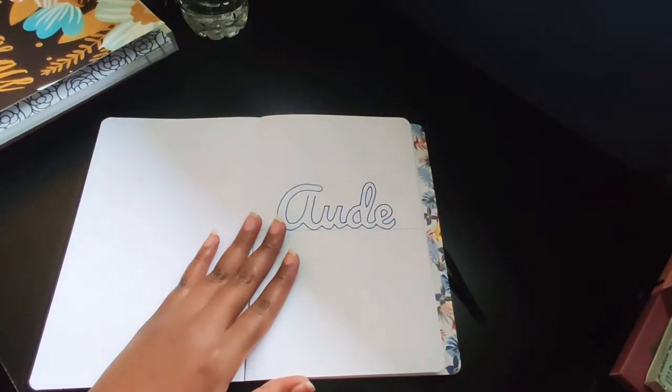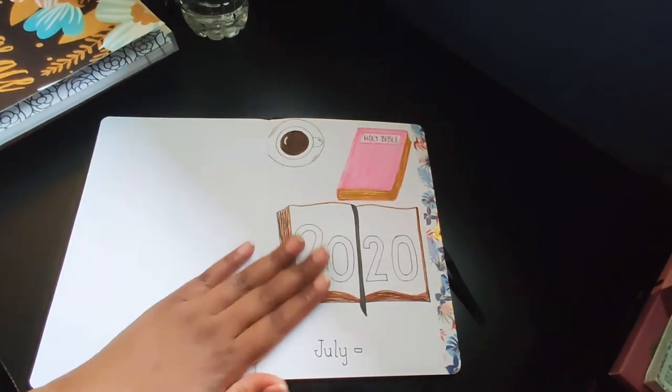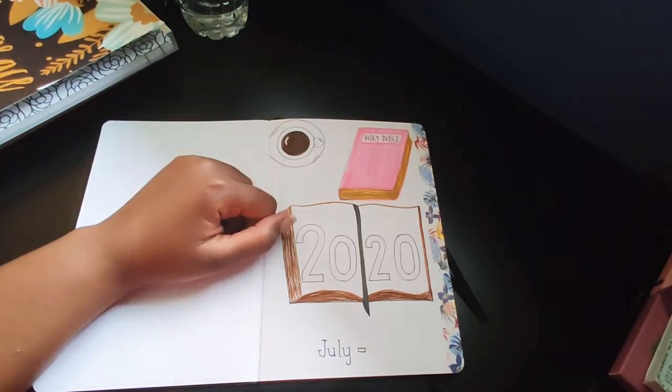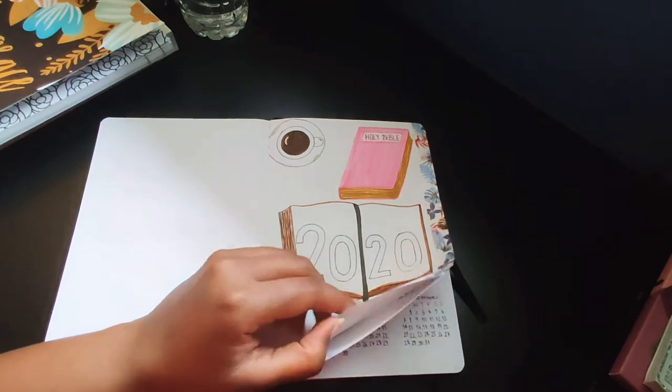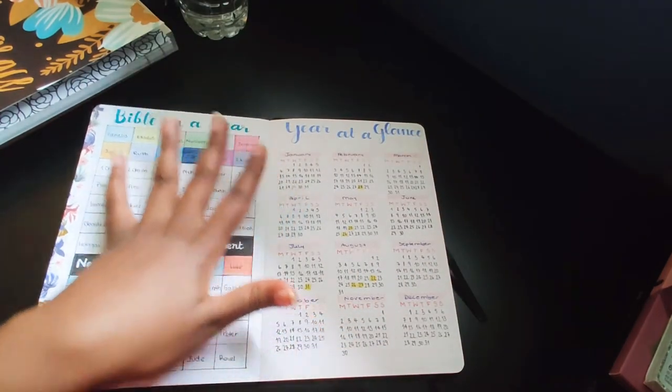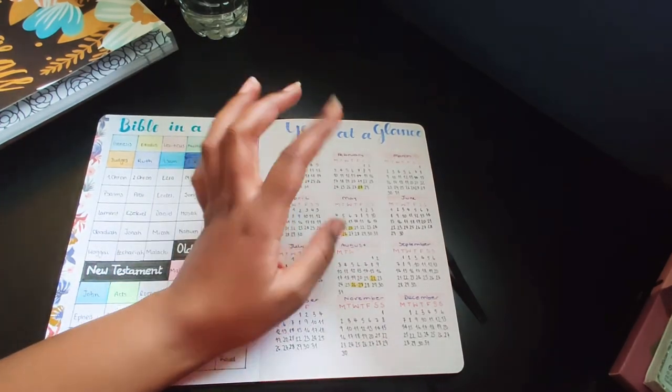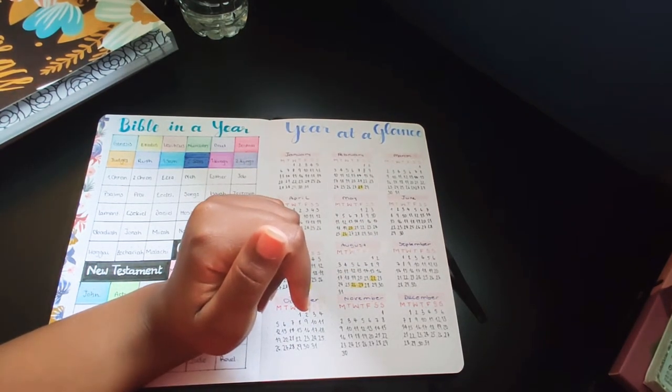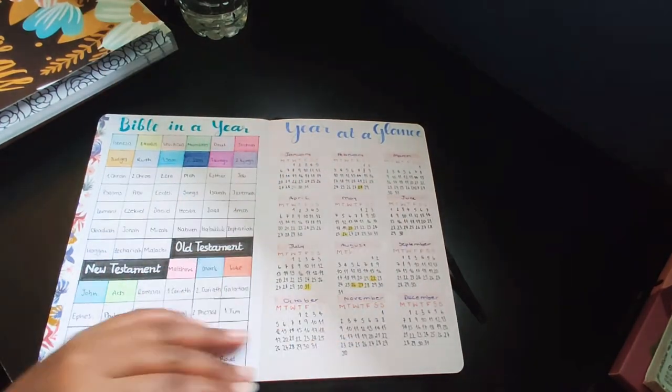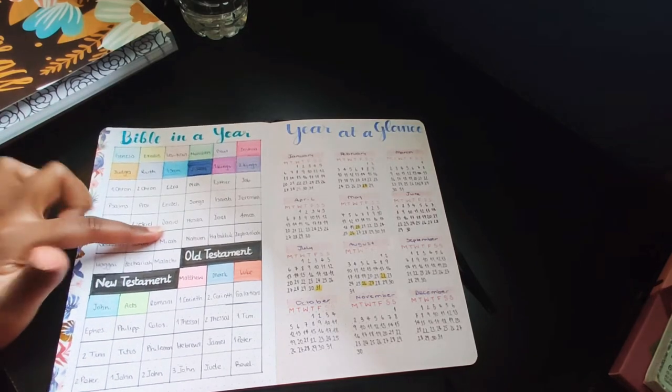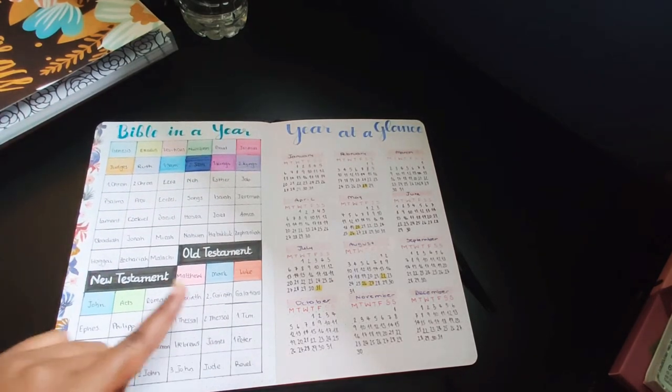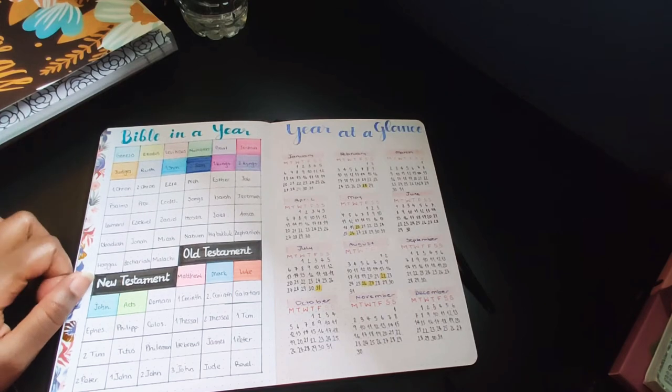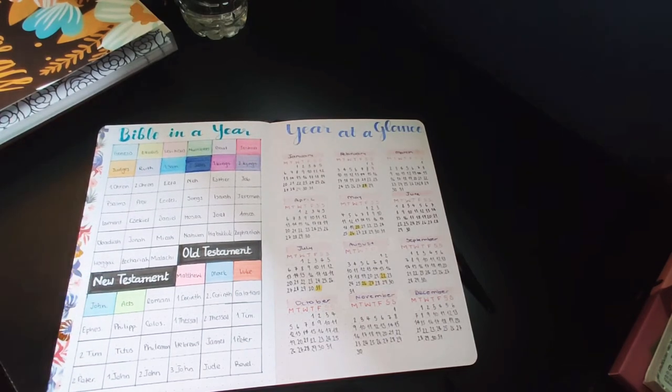So the first page I just put my name. I'm still struggling to figure out what I'm going to do. And then for the cover page I just did 2020 in an open journal with my Bible and my cup of coffee, which is usually how I do Bible study. And then I did the Bible in the Year and the Year at Glance pages. I'm regretting creating the Year at Glance because I still don't really see the use for it. But I've created it so it's just there.